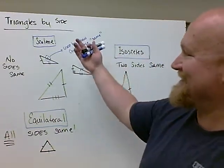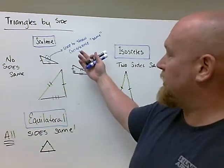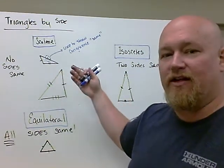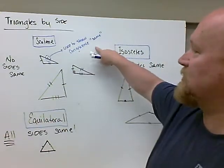When we measure triangles by their sides, we have three different types of triangles. We categorize it as scalene, and that's kind of a weird word, if none of the sides are equal, if none of the sides are what's called congruent, which is just a big fancy word meaning the same.